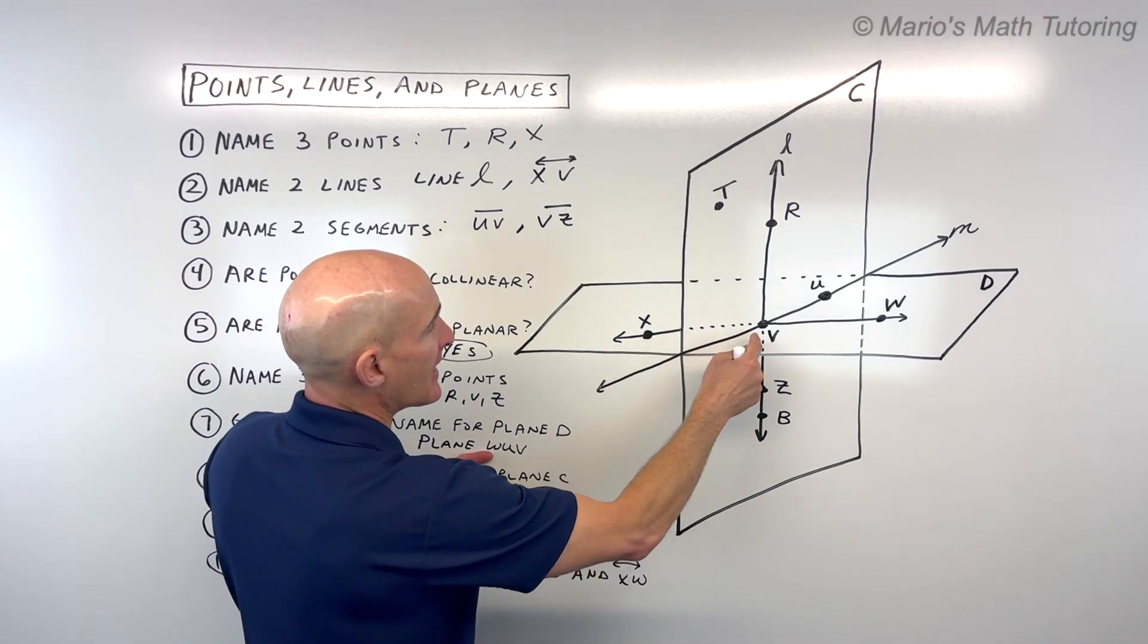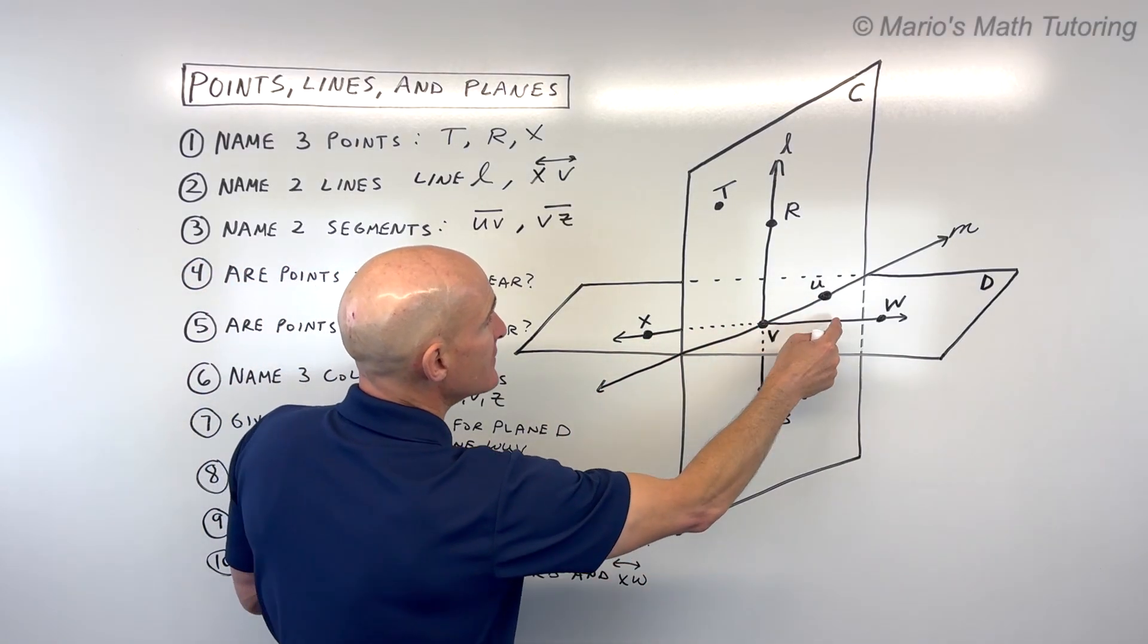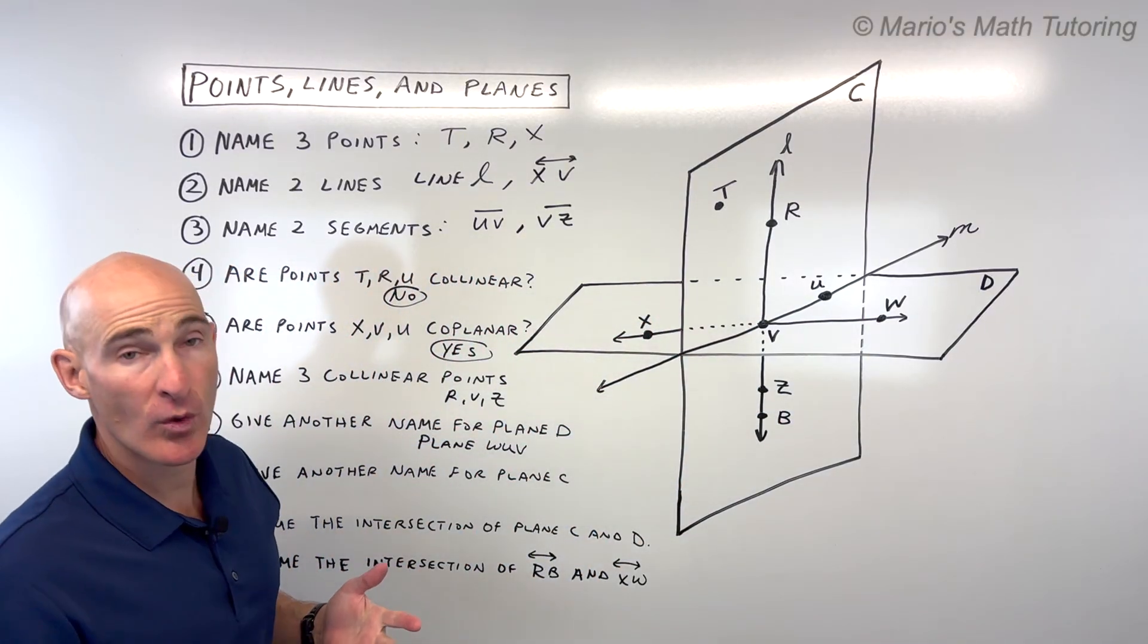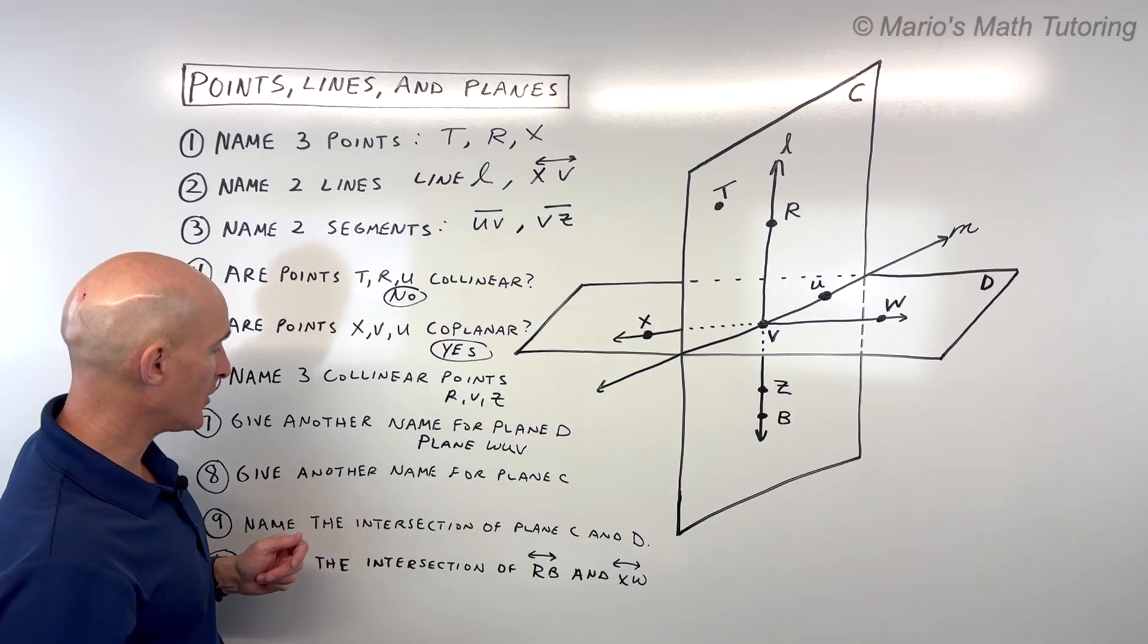There's more than one way to name this plane. I could have done plane XVU. I just couldn't do plane XVW because these three points are in a straight line, and there's more than one plane that goes through those collinear points.